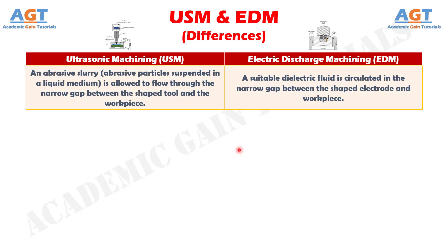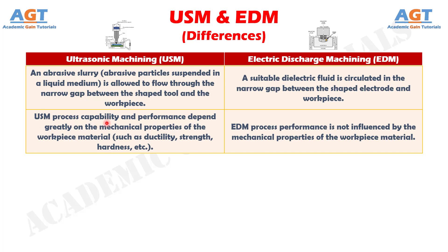Difference number 7: In ultrasonic machining, an abrasive slurry — abrasive particles suspended in a liquid medium — is allowed to flow through the narrow gap between the shaped tool and the workpiece, whereas in electric discharge machining, a suitable dielectric fluid is circulated in the narrow gap between the shaped electrode and workpiece. Difference number 8: Ultrasonic machining process capability and performance depend greatly on the mechanical properties of the workpiece material, such as ductility, strength, hardness, etc., whereas electric discharge machining process performance is not influenced by the mechanical properties of the workpiece material.